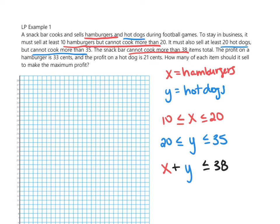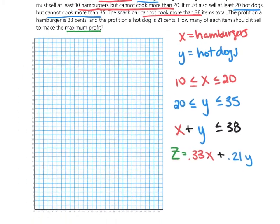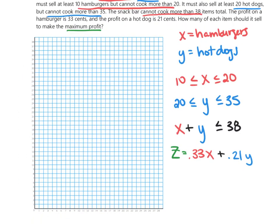The last part is the objective function Z. We want to maximize the profit, so Z is equal to 0.33X plus 0.21Y, which will maximize our profit.